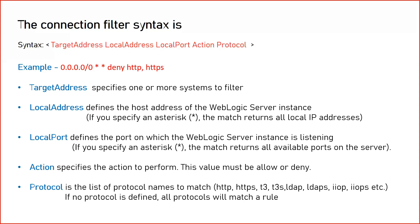The second is the local address. The local address means the machine or server on which your WebLogic server is running — this is the IP address of that machine. There could be multiple IP addresses if there are multiple NIC cards attached to your machine, or you could have different kinds of virtual configurations where multiple IPs are assigned to your machine. In that case, you have to specify the IPs here for the local machine on which your WebLogic server is running.